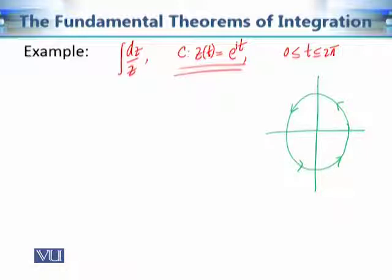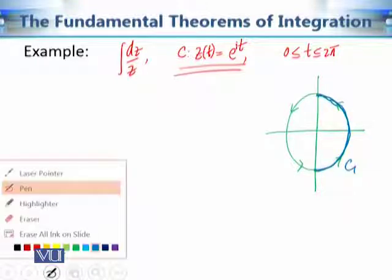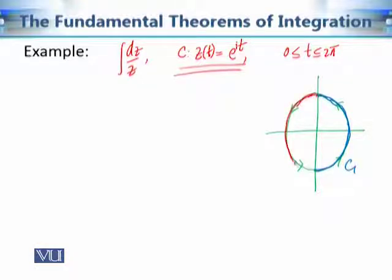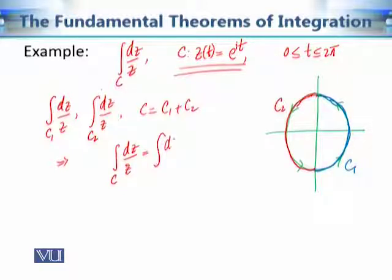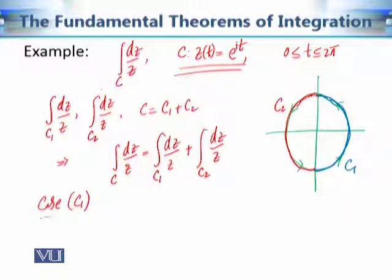Since the contour is a full circle, we divide it into two parts: C1 and C2. The integral along C equals the integral along C1 plus the integral along C2. So the contour integral of dz/z equals the integral along C1 plus the integral along C2.